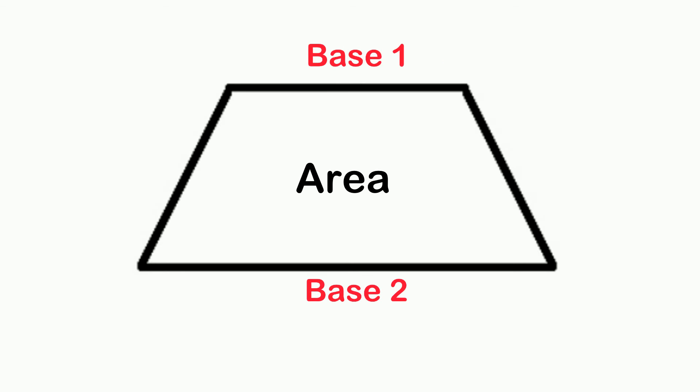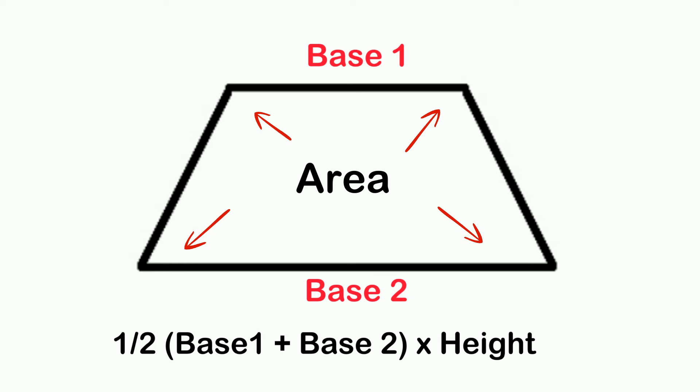You can find the area of a trapezoid by taking one half times base one plus base two times the height. The height is not the side length but a line that is perpendicular to the base. This is important.